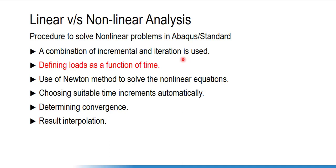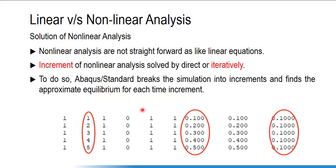Once the load is defined as a function of time, we choose either the Newton method or quasi-Newton method to solve the problem. When we submit the job, Abaqus Standard automatically chooses an appropriate increment for the problem, finds convergence for each increment, solves the problem, and finally interpolates the results between nodes and elements.